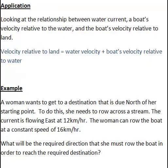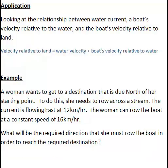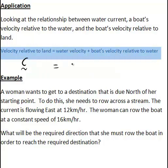And this can be applied to looking at the relationship between water current, a boat's velocity relative to water, and the boat's velocity relative to land. Namely, that the boat's velocity relative to land, which we'll call vector c, equals the velocity of the water, that is the current, plus the boat's velocity relative to water.